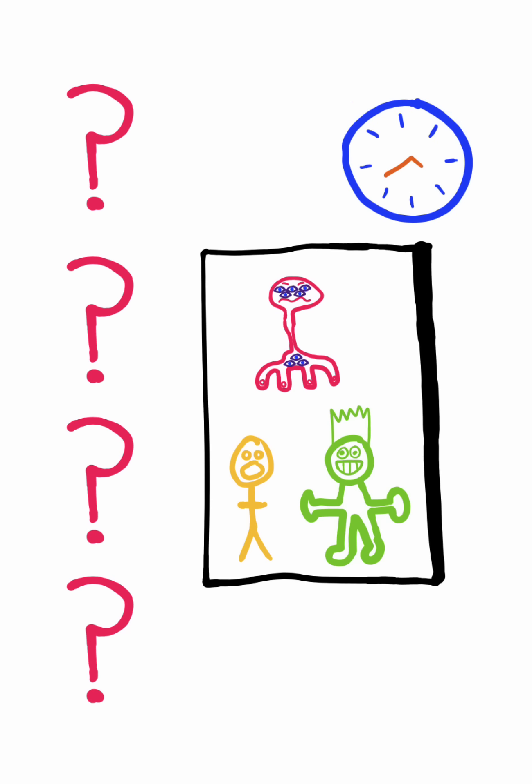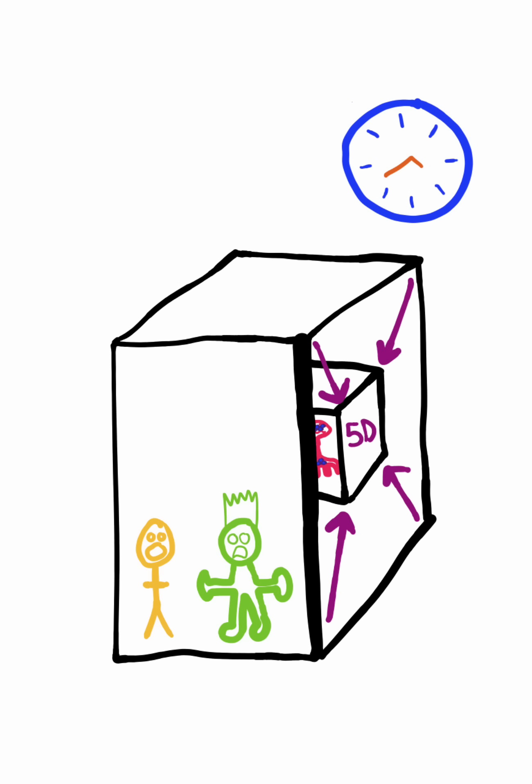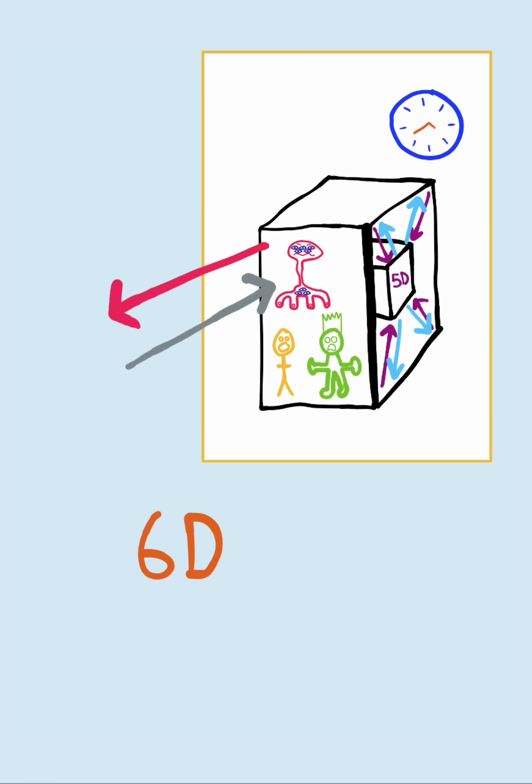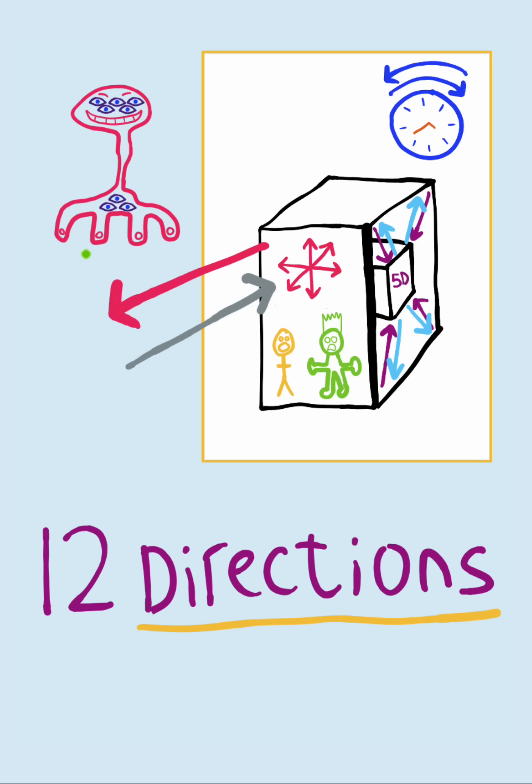Well, this creature would also have a hyperspace in the fifth dimension they could freely move through. And in addition to these five dimensions, our creature would have access to another hyperspace in the sixth dimension. So these would be the 12 unique orthogonal directions of our six-dimensional being.